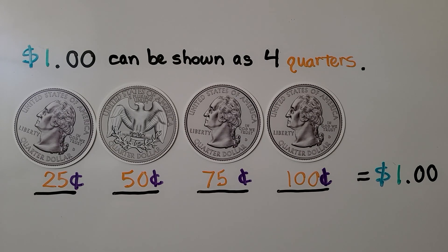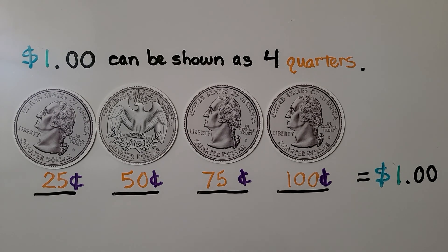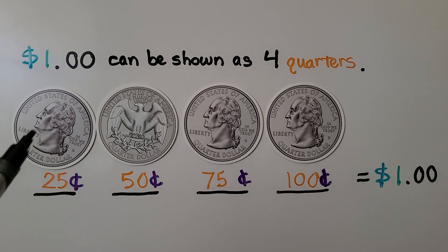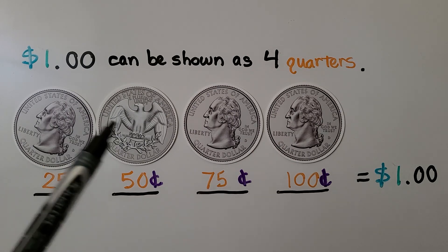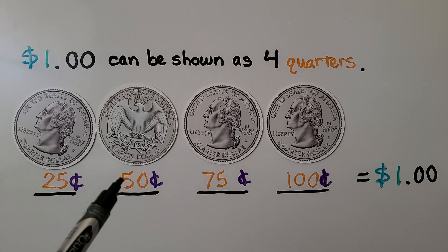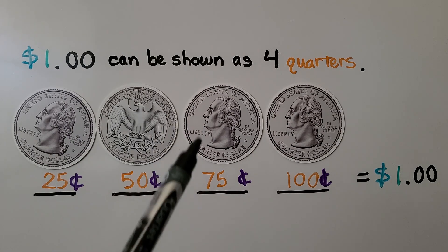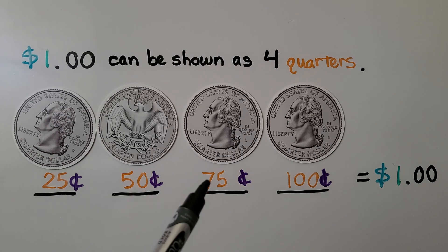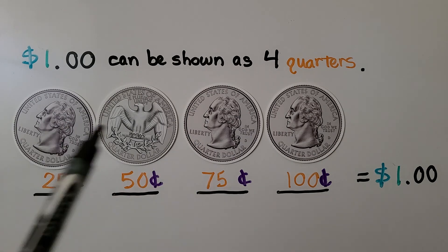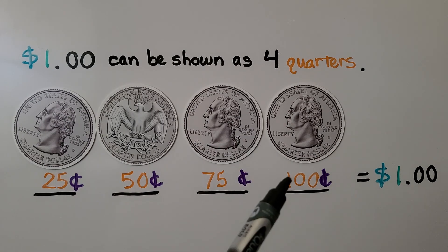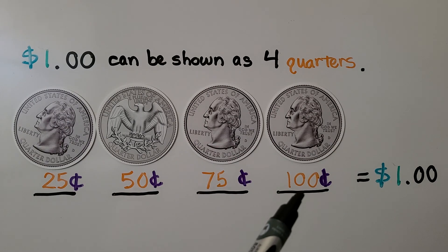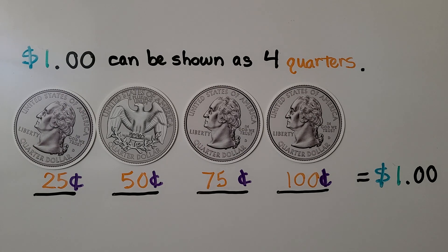$1 can be shown as four quarters. One quarter is 25 cents, two quarters would be 50 cents, three quarters would be 75 cents, four quarters would be 100 cents. And 100 cents is equal to $1.